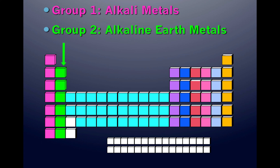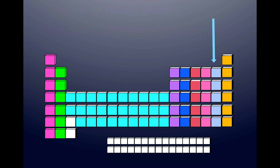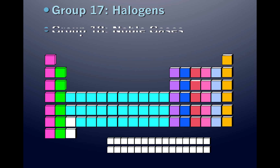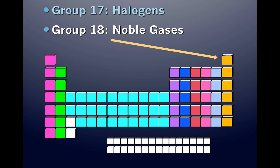The Group 1 elements are called the alkali metals. The Group 2 elements are called the alkaline earth metals. Group 1 has one valence electron; Group 2 has two valence electrons. Group 17 are the halogens — the halogens have seven valence electrons. Group 18 are the noble gases; the noble gases all have eight valence electrons, except for helium, which has two.